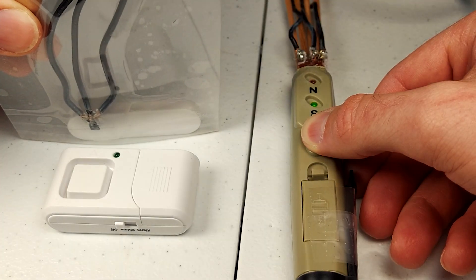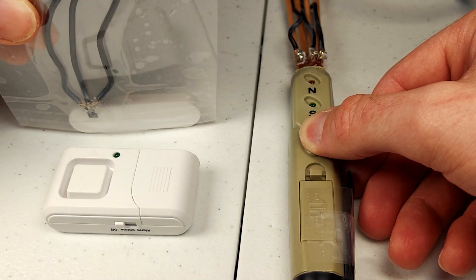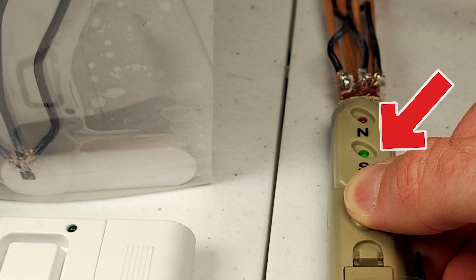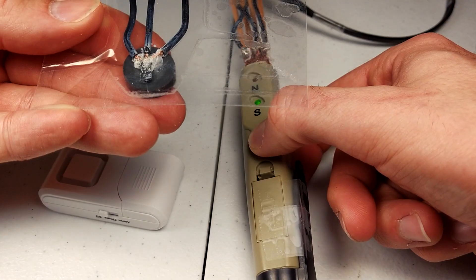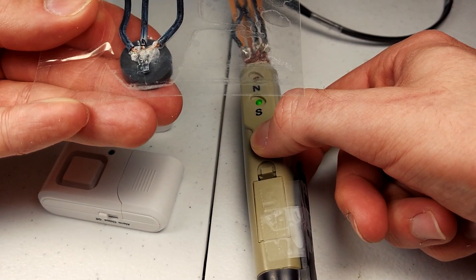To do this, we use a Hall effect sensor. It's a device that can determine the polarity of a magnet. This is useful to know because, regardless of the state of the switch, the presence of a magnet still indicates a closed door.